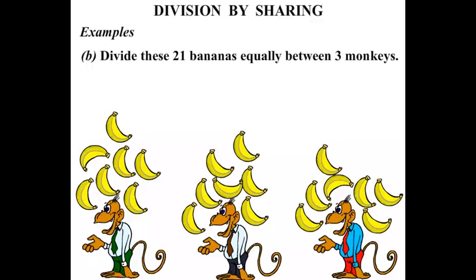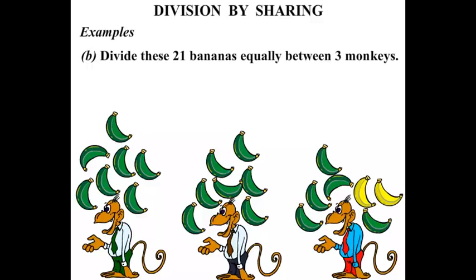So they've been split up evenly. Let's see how many each get. 1, 2, 3, 4, 5, 6, 7. The first monkey gets 7 bananas. 1, 2, 3, 4, 5, 6, 7. The second monkey also gets 7 bananas. 1, 2, 3, 4, 5, 6, 7. Right. 7 bananas for the third monkey as well. So each monkey gets 7 bananas.